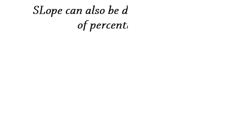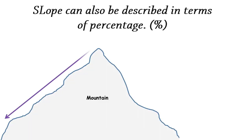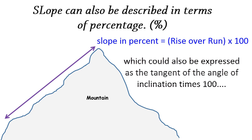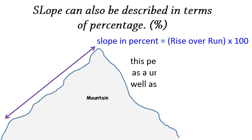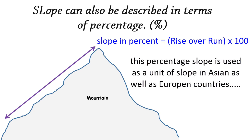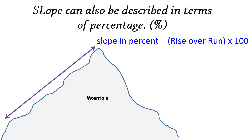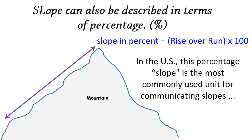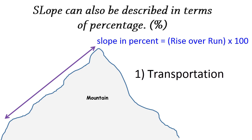Another way of slope representation is the percentage method. You may have seen or heard about the slope of a mountain or road gradient with the term percentage. The formula is rise over run times 100, which could also be expressed as tangent of the angle of inclination times 100. This percentage slope is used as a unit of slope in Asian as well as European countries. In the U.S., this percentage slope is the most commonly used unit for communicating slopes in transportation, surveying, and construction.